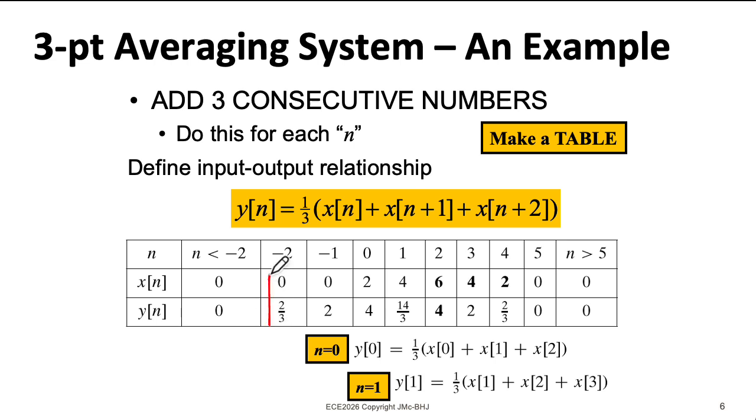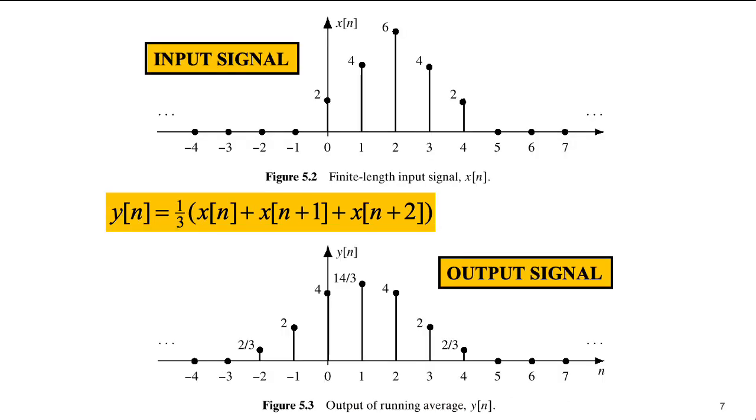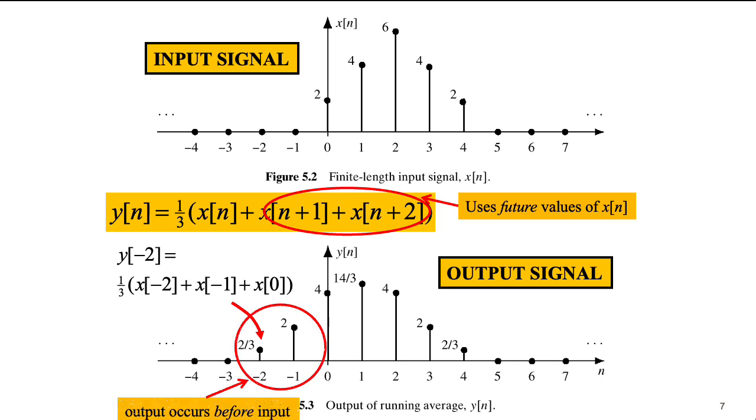But here, for n equals negative 2, there we start getting some non-zero input. So here, I would have 0 plus 0 plus 2. That's the first input we get that's not 0. Average all of that, I wind up with two-thirds. So here we have a plot of the input and the output. Notice that because to figure out the output, we need future values of the input. The output actually starts before the input. This is an example of what we call a non-causal system.